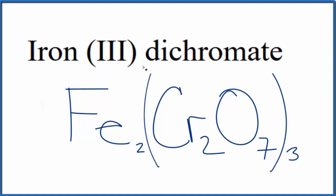So this is the formula for iron three dichromate, Fe2(Cr2O7)3. And the three means that we have three dichromate ions there. This is Dr. V, and thanks for watching.